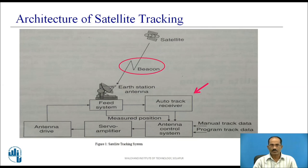In the case of the manual track method, the desired position of the satellite in the two orthogonal axes is set by the operator. Whereas in the program track method, the desired position of the satellite in the two orthogonal axes is set by the computer. The difference in actual and desired antenna positions produces an error signal, which is used to drive the antenna.